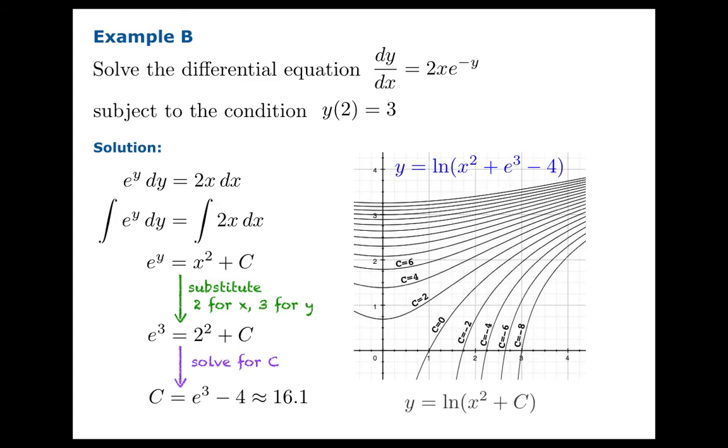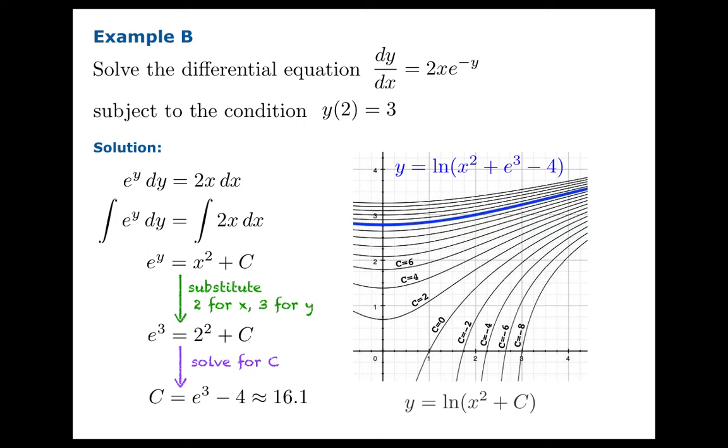Now once again, graphically, you could plot solutions for various choices of c, and you'll notice that from among these, when c is about 16, in fact, e cubed minus 4, you're going to find the solution whose graph contains the point (2, 3).